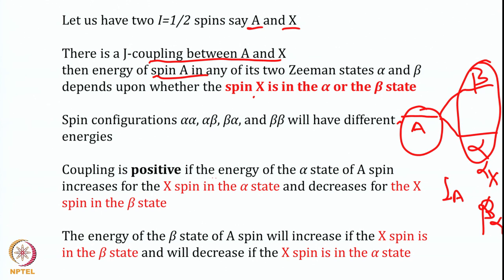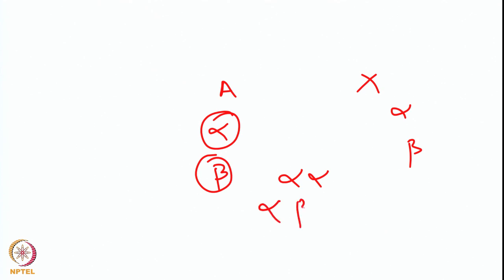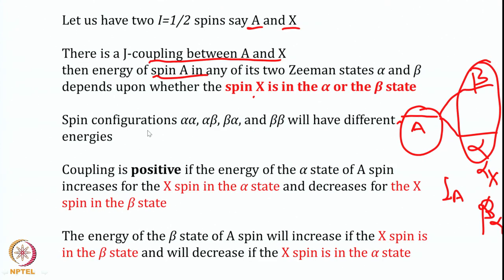Because of this coupling there are four possible states: alpha-alpha, alpha-beta, beta-alpha, and beta-beta — representing up-up, up-down, down-up, and down-down orientations of the two spins. These states will have different energies. Because spin A is not in isolation but coupled with spin X, the energies of the alpha state and beta state of spin A will change depending on whether X spin is in alpha or beta state.